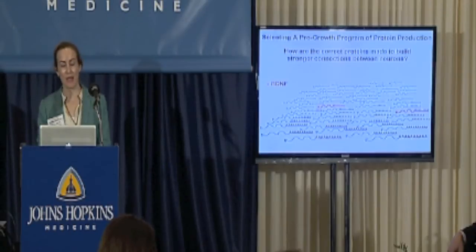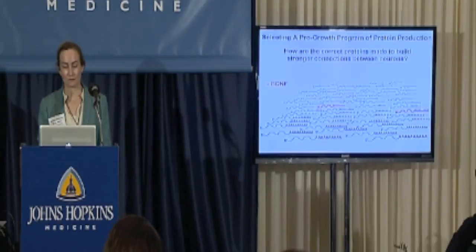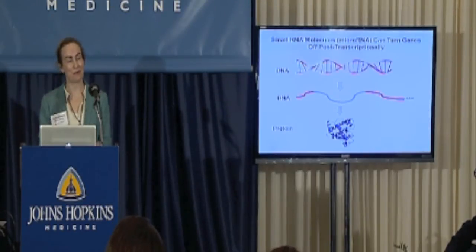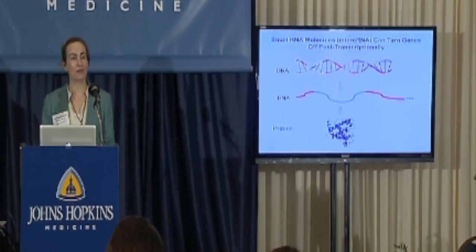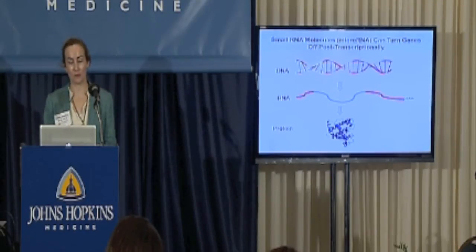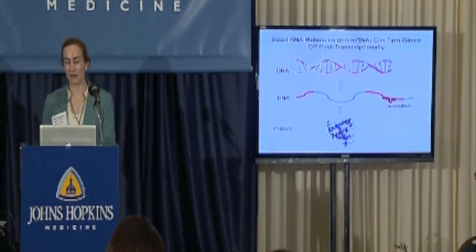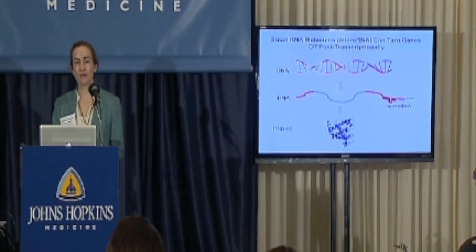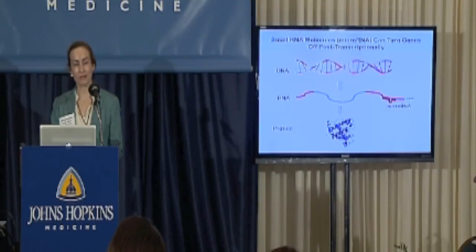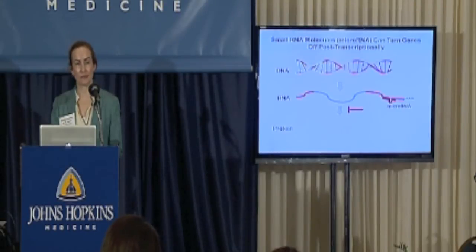The question we want to ask is: how are the correct proteins made to build stronger connections between neurons? What we found is that there are small RNA molecules, previously discovered to turn genes on and off, called microRNAs. They act at the level of RNA by physically binding to the RNA in a partially complementary manner, which acts to turn off the production of protein from that RNA.